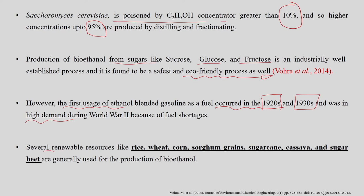Several renewable resources — rice, wheat, corn, sorghum, grains, sugarcane, cassava, and sugar beet — are generally used for ethanol production. These resources are divided into two classes: sucrose-containing materials such as sugarcane and sugar beet, and starchy materials such as wheat, corn, sorghum, grains, and cassava.